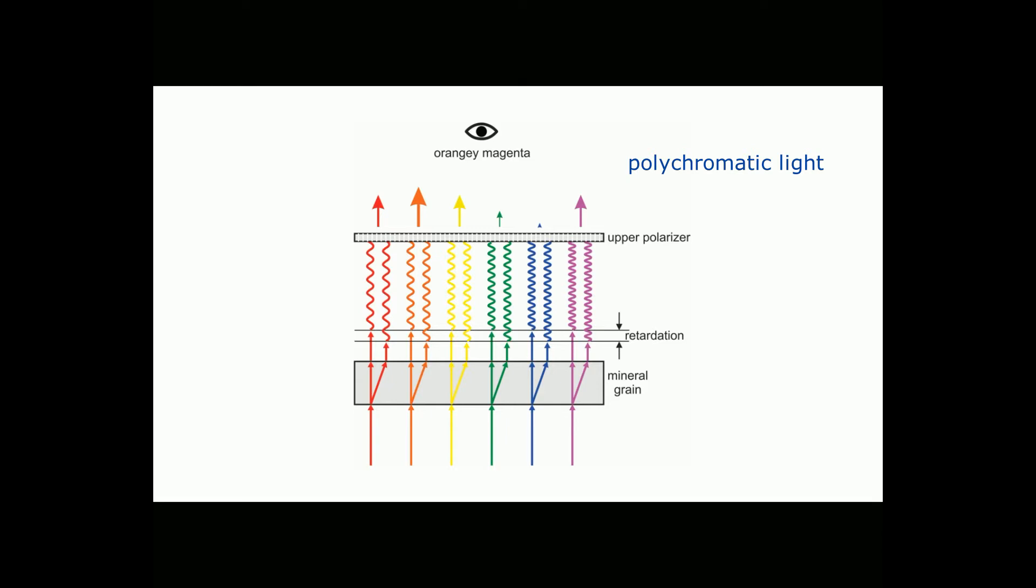If we rotate the stage, the relative intensities of the slow rays and fast rays will change. But they're going to change differently for each wavelength. So the interference colors will change. But every 90 degrees, the grain will go extinct. And at 45 degrees to the extinction angles, we will see the maximum interference colors possible.